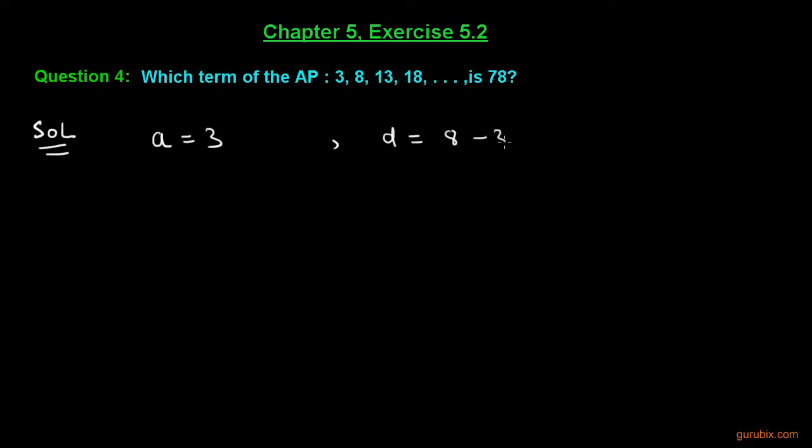So, we get 8 minus 3, we get 5. This means the common difference D equals 5.